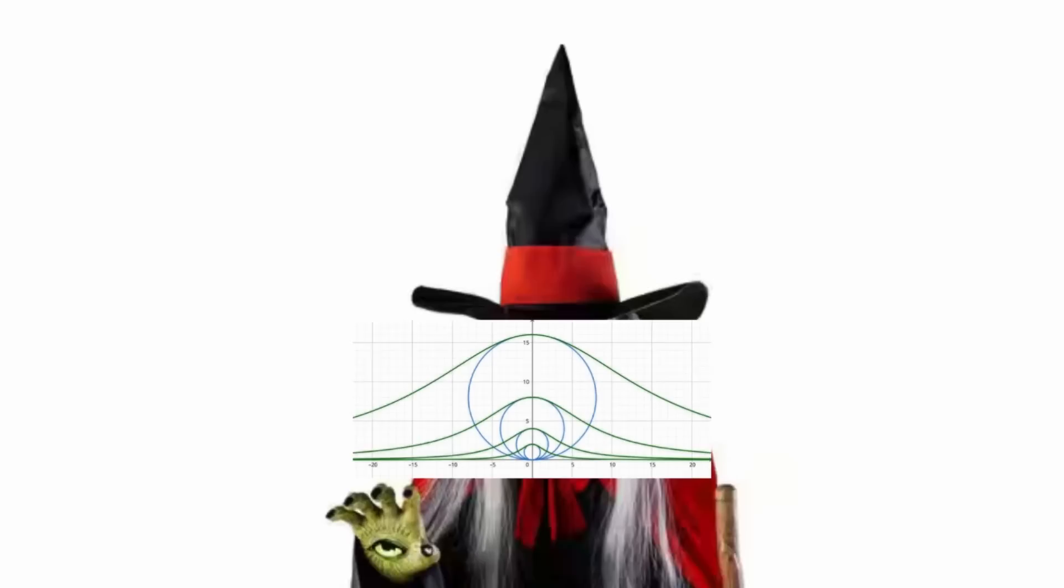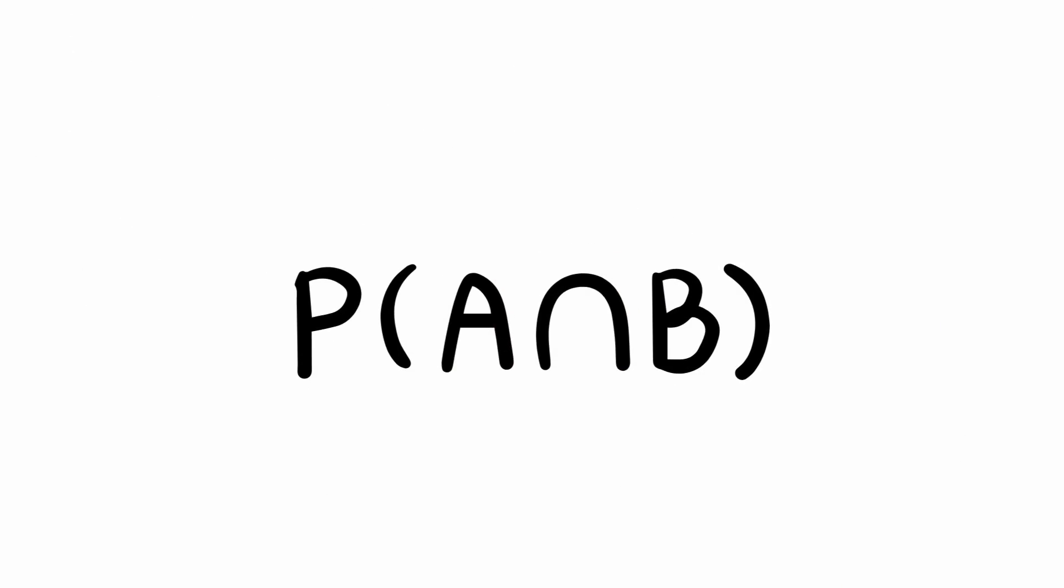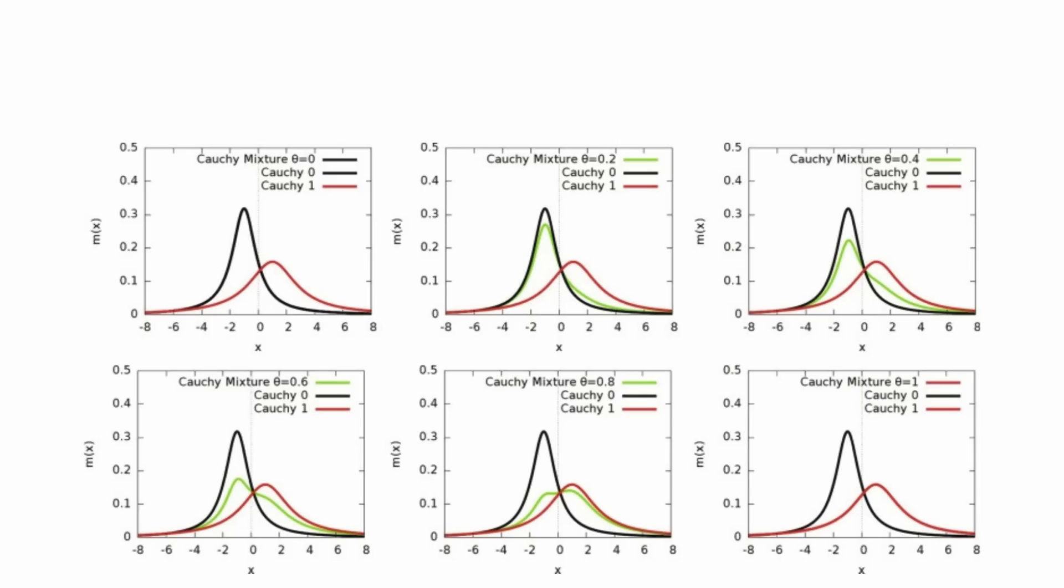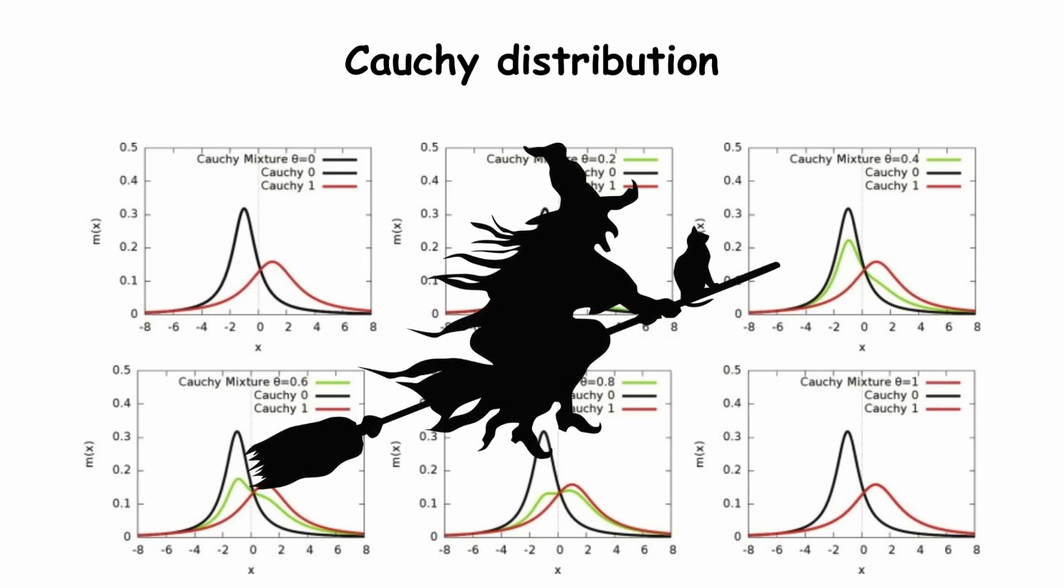One case where the Witch arises is in probability theory. A continuous random variable is a variable with uncountably infinitely many possible values. The probability that such a variable falls within a given interval can be determined using a function called probability density function. One example is the probability density function of the Cauchy distribution. Graphing it gives us the Witch.